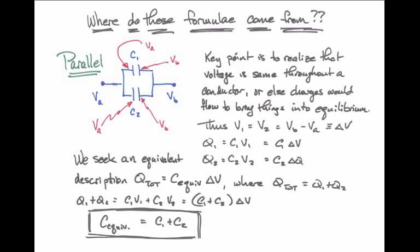On the far left, I have Q total, and on the far right, I have something in parentheses times delta V, which is exactly what I saw in the beginning. This means that the equivalent capacitance in this case is just the simple sum of the two capacitances.